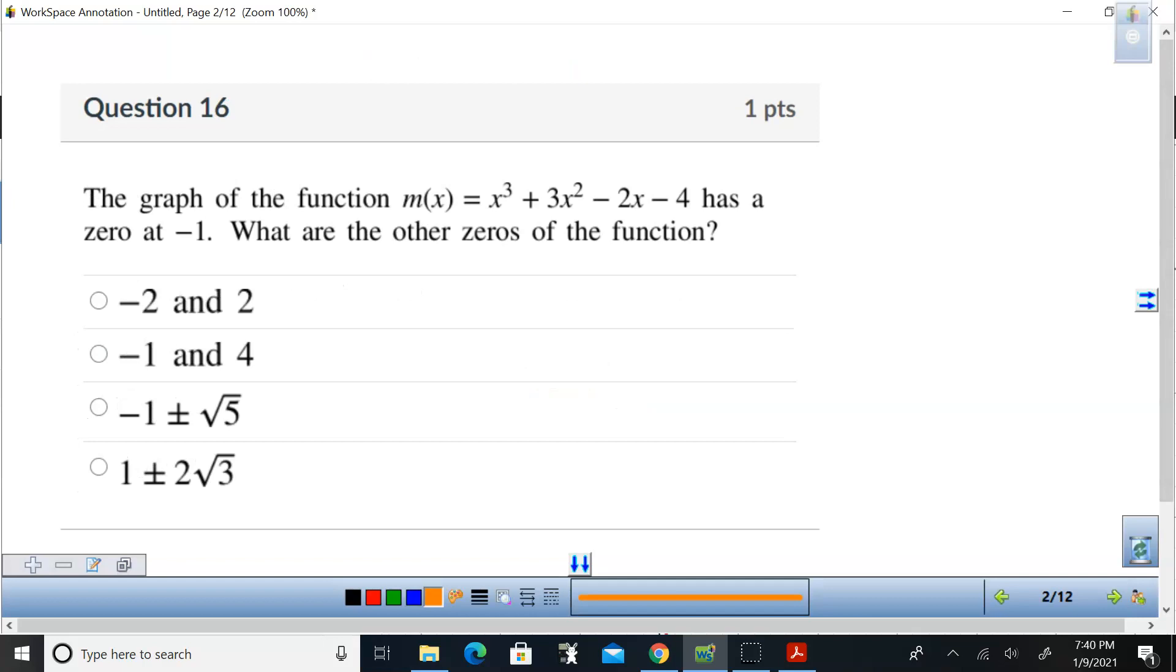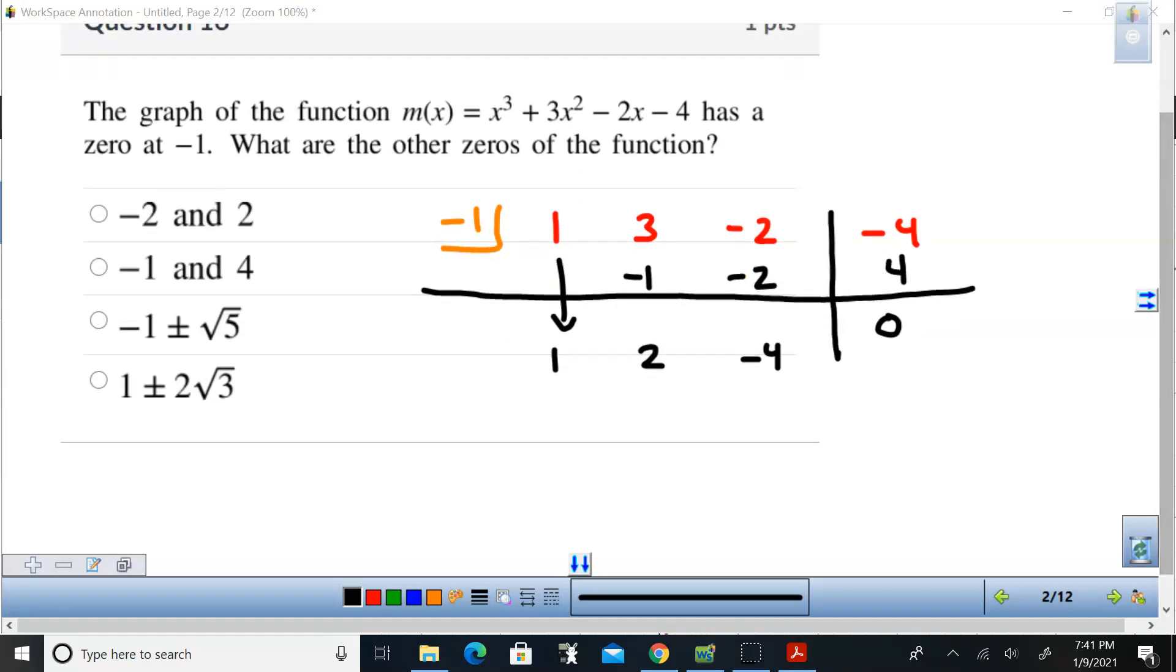Alright, the next one says, the graph of the function m of x has a 0 at negative 1. What are the other 0's? Well, first I'm going to use synthetic, and I am going to divide using that negative 1, 0. So I'm going to write down the coefficients, 1, 3, negative 2, negative 4, and then I'm going to use synthetic so I can get a quadratic. Now this should have a remainder of 0, so I bring down the 1, and I multiply by that number in the corner. Then I combine, that's a 2, multiply, I get negative 2, combine, I get negative 4, multiply, I get positive 4.